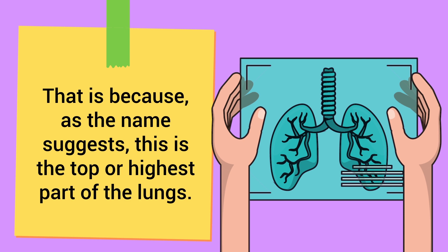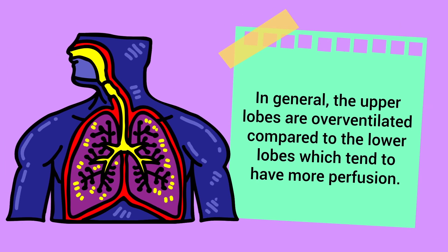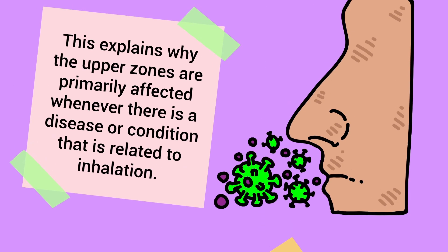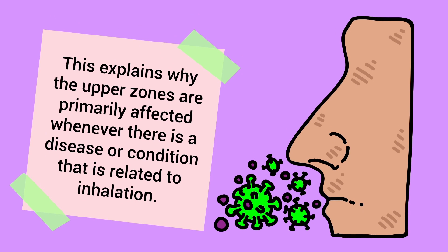In general, the upper lobes are over-ventilated compared to the lower lobes, which tend to have more perfusion. This explains why the upper zones are primarily affected whenever there is a disease or condition related to inhalation.